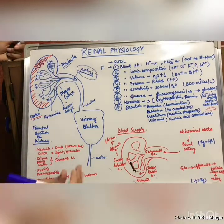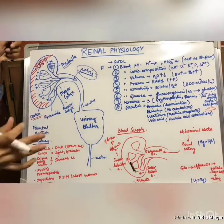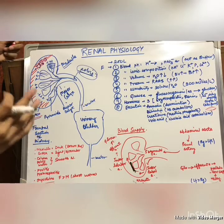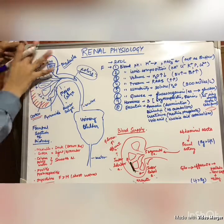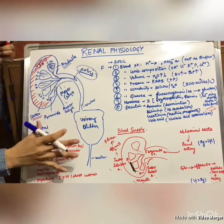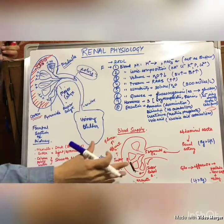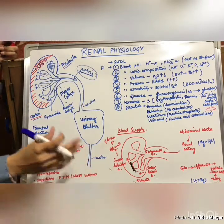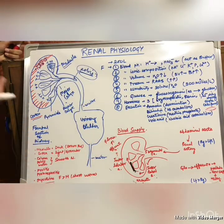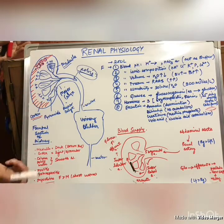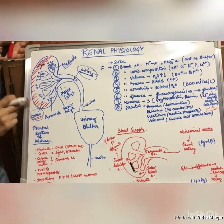Hello everyone, today we are going to cover renal physiology. I'm going to talk mainly about three parts: basic anatomy of the kidney, basic structures, the function, and the blood supply of the kidney. Let's begin with the basic anatomy. We can divide the kidney into three parts: the outermost cortex,